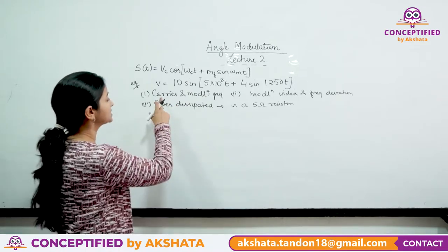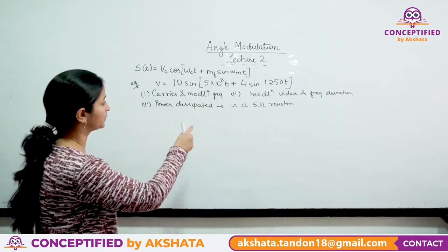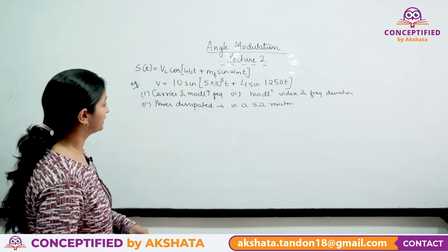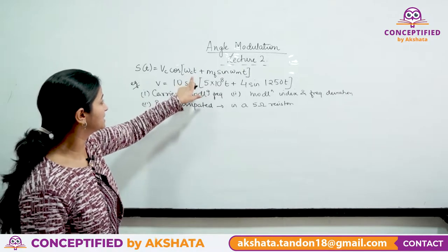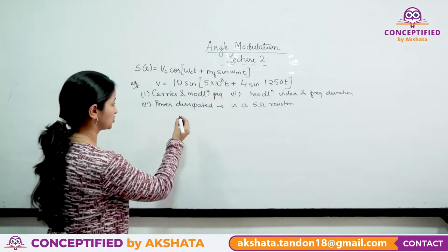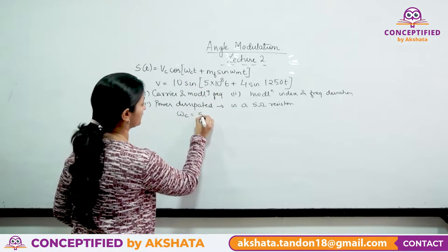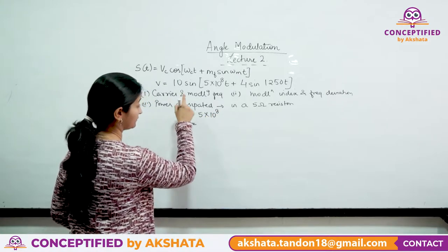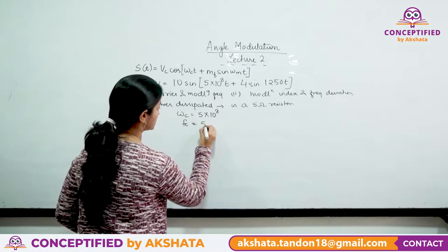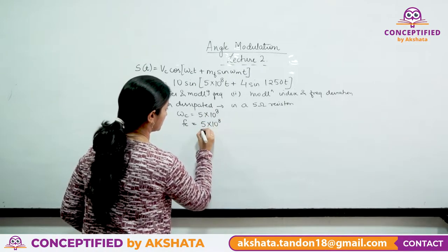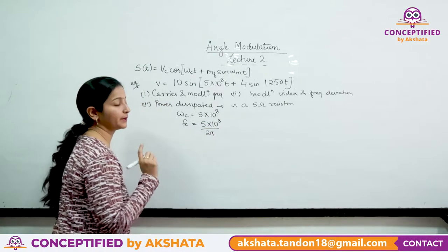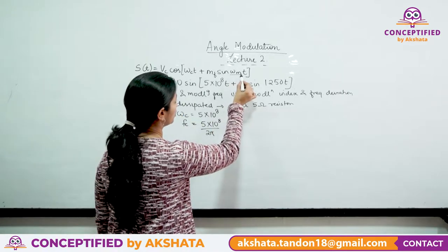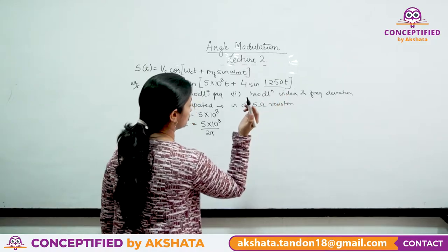To solve this, first we compare the equation with the standard FM equation. For carrier frequency, ωc = 5×10⁸, so fc = 5×10⁸ / 2π. For modulating frequency, ωm = 1250, so fm = 1250 / 2π.